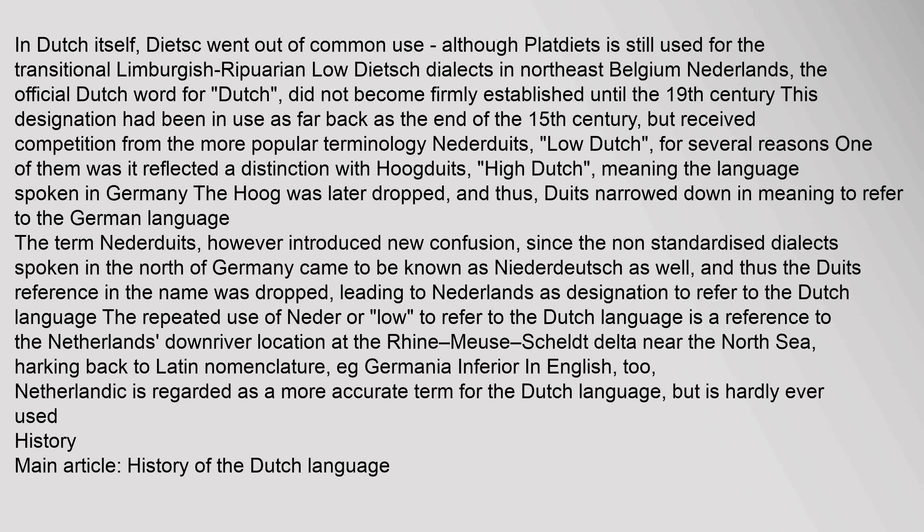In Dutch itself, 'Dietsc' went out of common use, though 'plat diets' is still used for transitional Limburgish-Ripuarian dialects in northeast Belgium. The official Dutch word 'Nederlands' did not become firmly established until the 19th century. It had been in use since the end of the 15th century, but faced competition from the more popular term 'Nederduits' (Low Dutch), which reflected a distinction with 'Hoogduits' (High Dutch), meaning the language spoken in Germany. As 'hoog' was dropped, 'Duits' narrowed in meaning to refer to the German language. Further confusion arose as northern German dialects also became known as 'Nederduits,' leading to the adoption of 'Nederlands' as the designation for the Dutch language — a reference to the Netherlands' downriver location at the Rhine-Meuse-Scheldt Delta near the North Sea. 'Netherlandic' is regarded as a more accurate term but is hardly ever used.